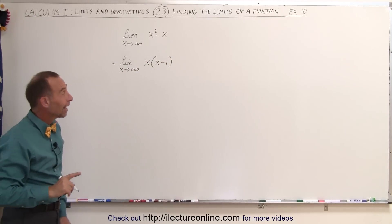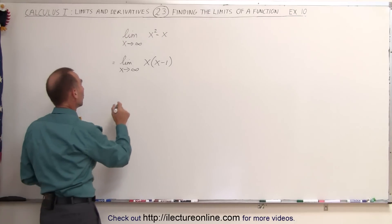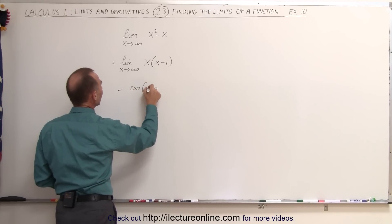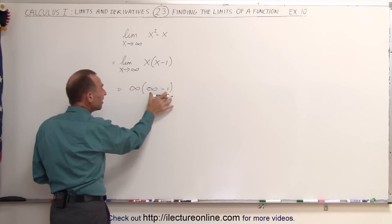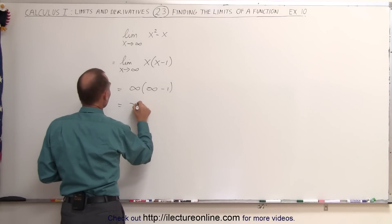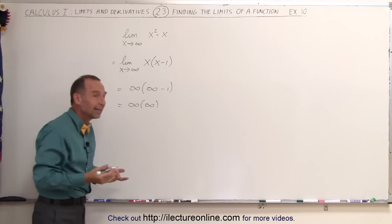Now we can go ahead and plug in the limit. That small change makes all the difference in the world. So this is now equal to infinity times (infinity minus 1), and of course infinity minus 1 is simply infinity, so this would be infinity times infinity, which is infinity.